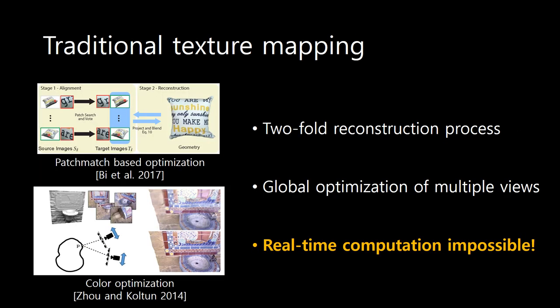Traditional texture mapping takes a two-fold reconstruction process: geometry and texture reconstruction. It requires several minutes of computation for optimizing correspondences. Thus, it is not feasible for real-time application.